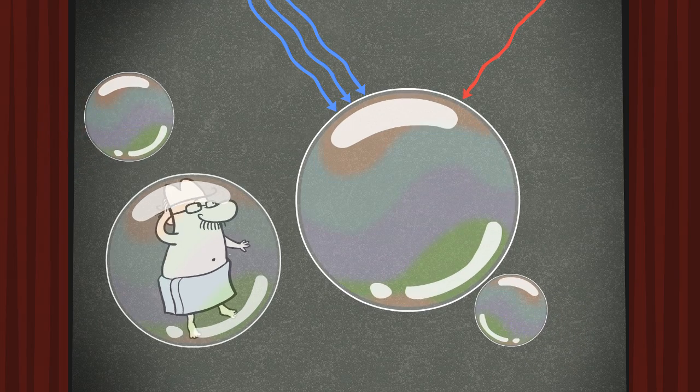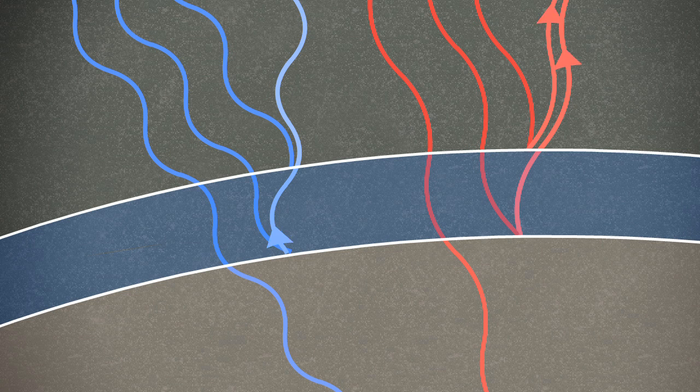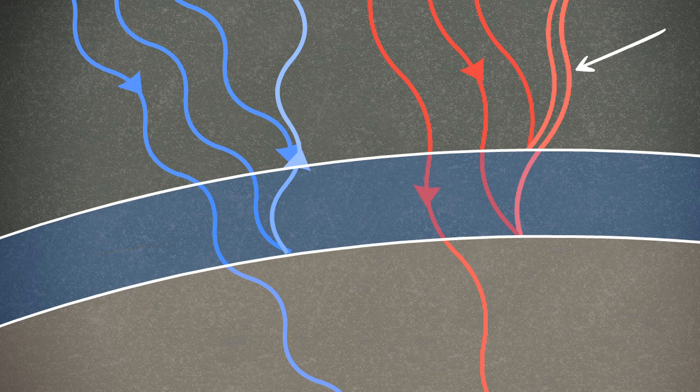Now, suppose a red light wave is hitting the same part of the bubble. Because red light waves are longer, the portions that reflect off the top and bottom surfaces do not line up. They cancel each other out, and do not create a very strong red reflection.